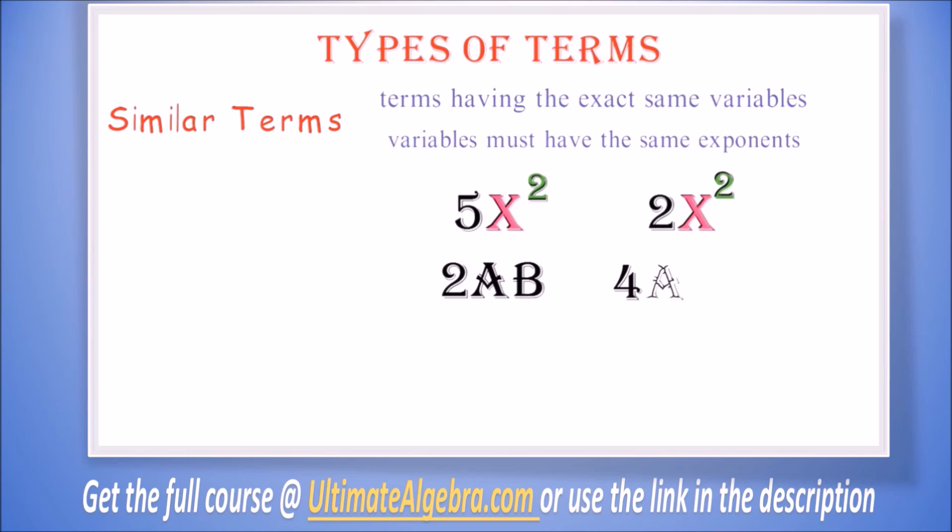2ab and 4ab are also similar terms because they both have the same variables or letters, and those variables have the same exponents.